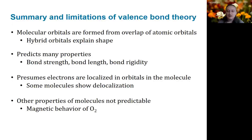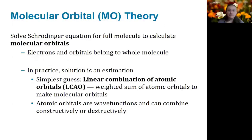Additionally, some other properties such as para- or diamagnetism are not explainable at all through valence bond theory. In the rest of this video, we will explore another theory of bonding that can address some of these deficiencies. In molecular orbital theory, electrons are no longer assigned to specific atomic orbitals, but are just considered to belong to the entire molecule.